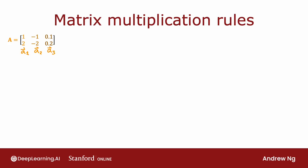What we're going to do is take A transpose and multiply that with a matrix W. A transpose is obtained by taking the first column of A and laying it on the side, then taking the second column of A and laying it on the side, and then the third column. So these rows are now A1 transpose, A2 transpose, and A3 transpose.